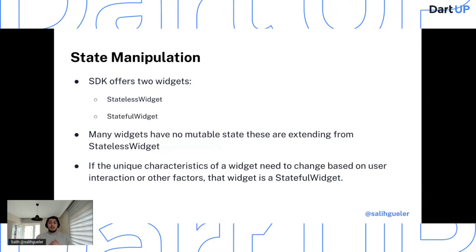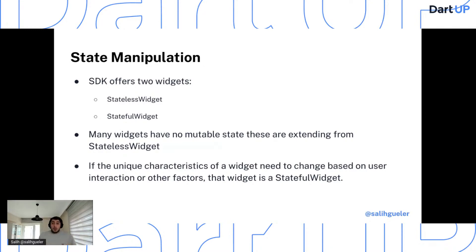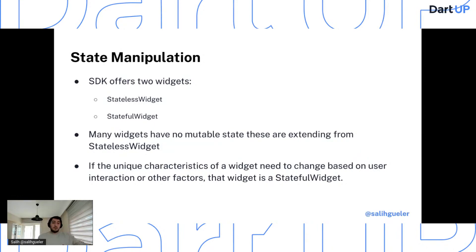Whenever you mutate the state object created with a StatefulWidget you must call setState(). Each time there's a change, the Flutter framework needs to know to recreate the view. The StatefulWidget itself is immutable, but the State object inside does the mutation. As widget trees get deeper, passing state up and down can get tricky, which is why Flutter introduced InheritedWidget — to pass information down the tree using context as a reference.